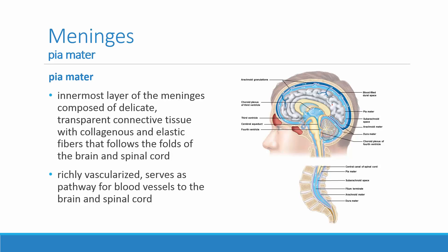The pia mater is the very delicate, transparent connective tissue. You could see it covering the gyri — the ridges of the cerebral cortex — and the sulci — the valleys between those ridges — during our brain dissection. It follows those folds very closely in both the brain and spinal cord and is richly vascularized. The pia mater serves as a pathway for blood vessels to grow through in order to supply blood deeper into the brain tissues.